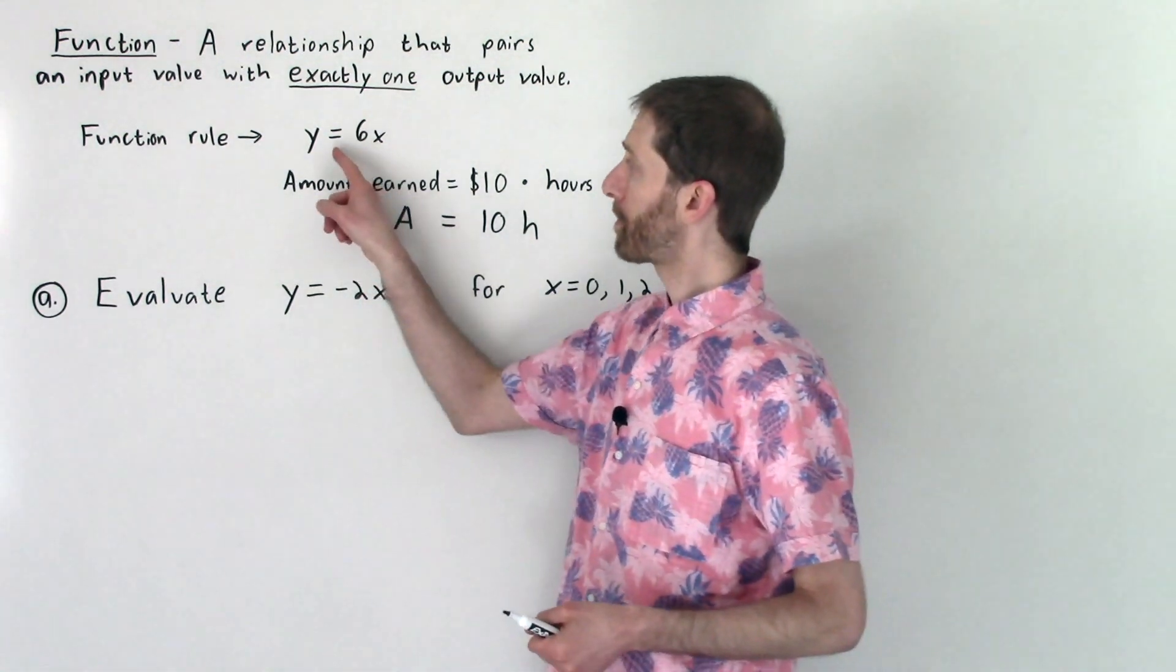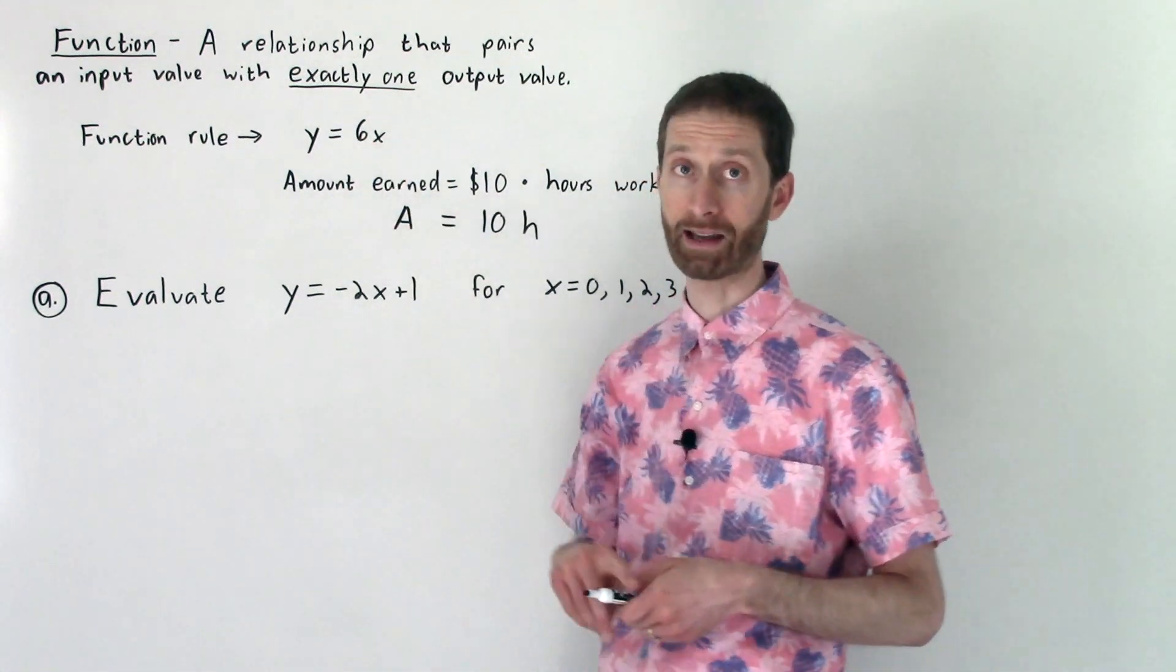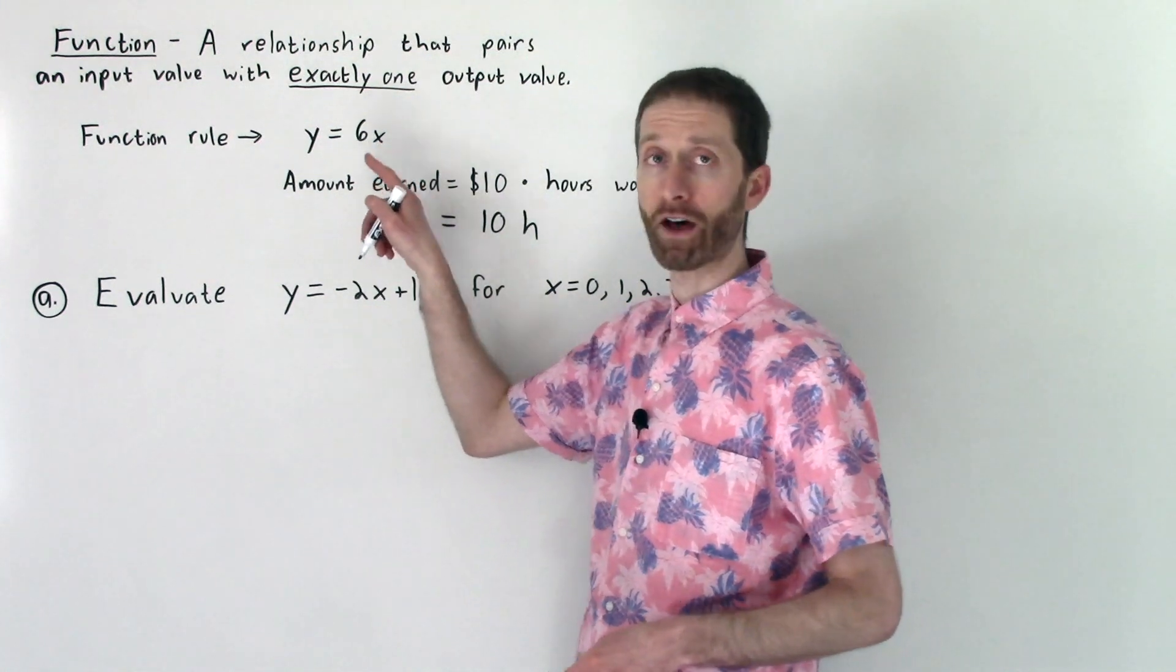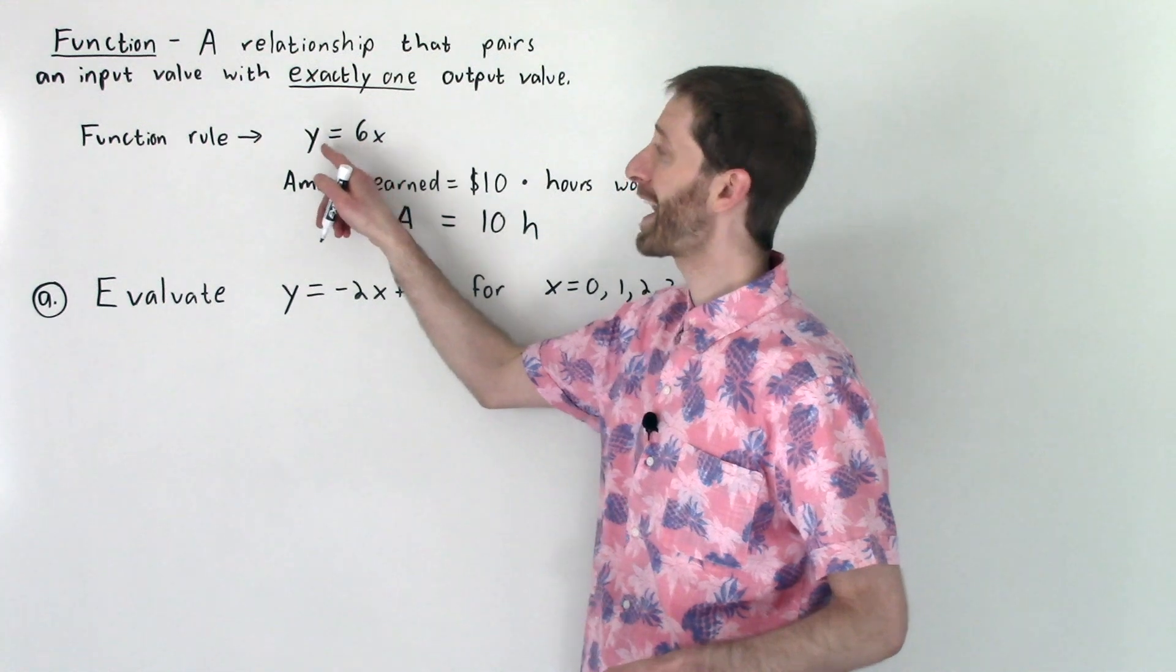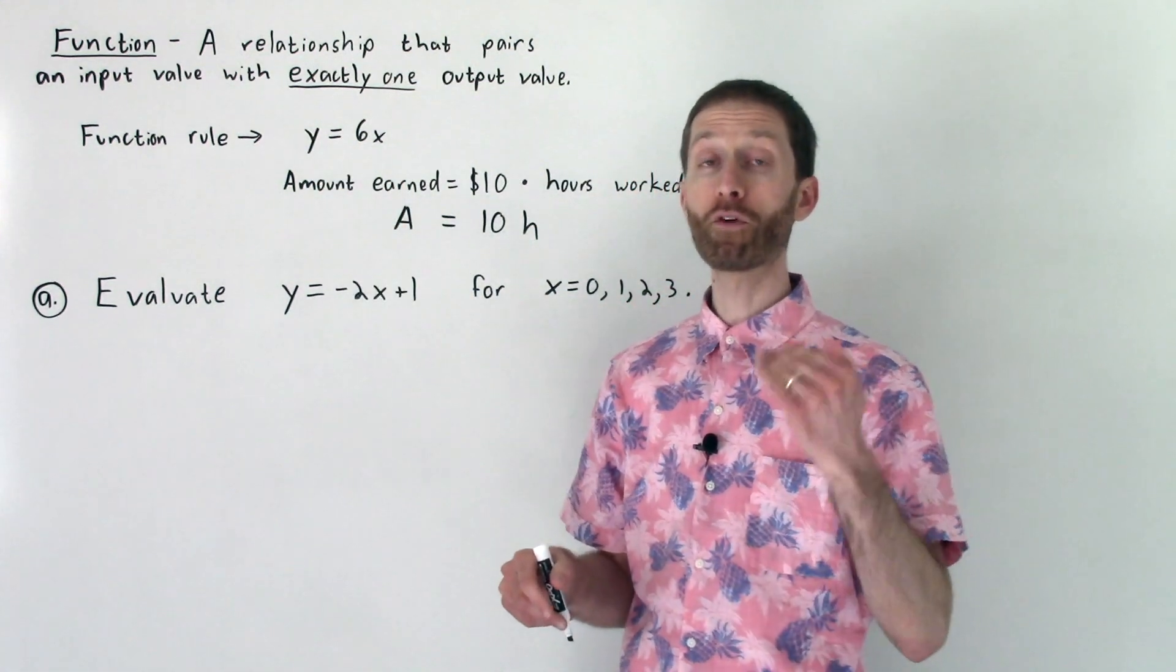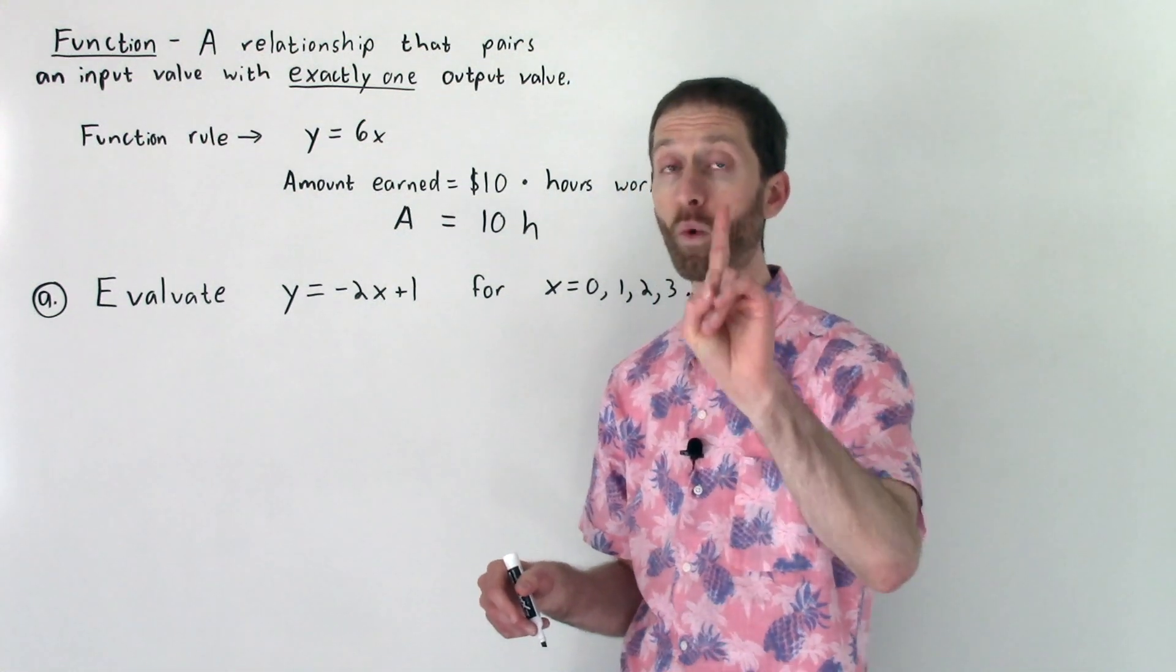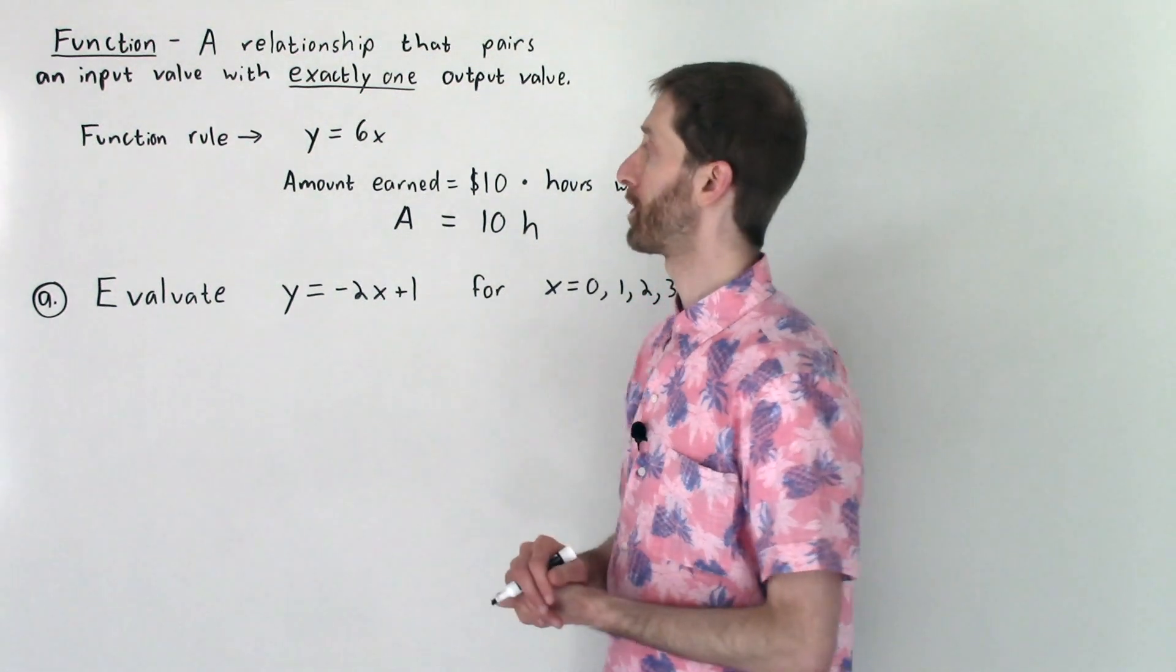So an example that you'd see is y equals 6 times x, meaning our output is y, and when we input x values, values for x, we will multiply them by 6 to get out the y value. So for every x value we put in, we will get out only one y value, which makes this a function. And it is the rule that describes the function.